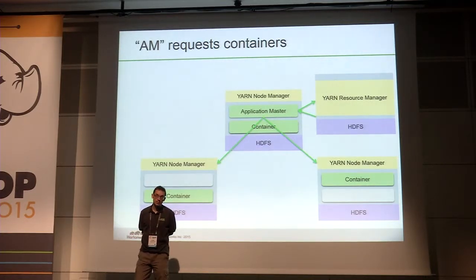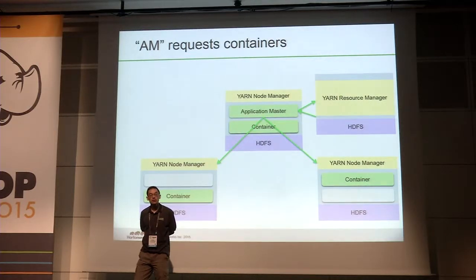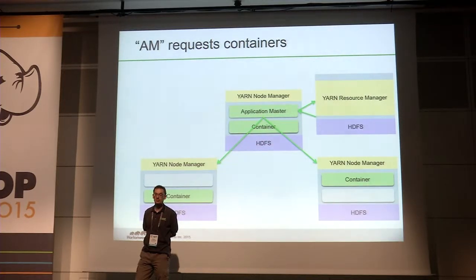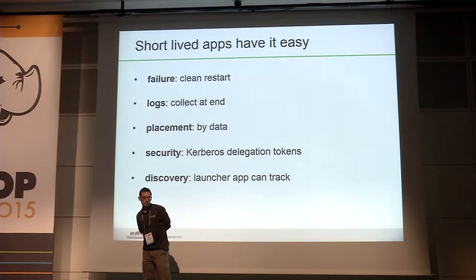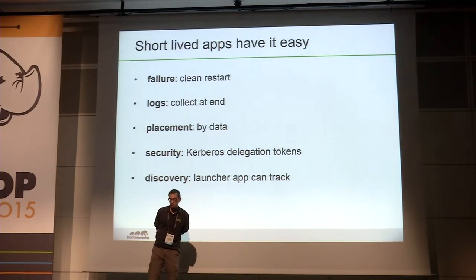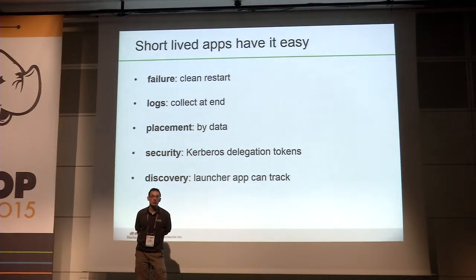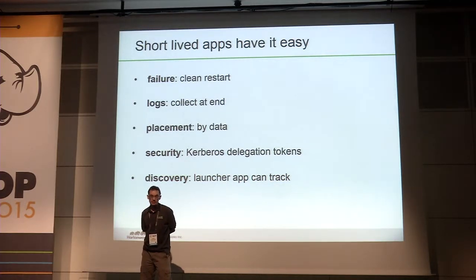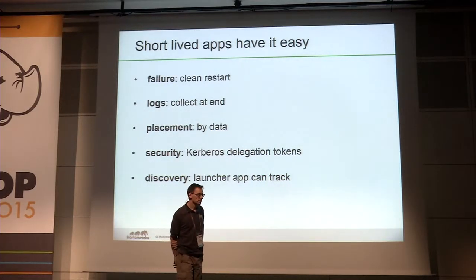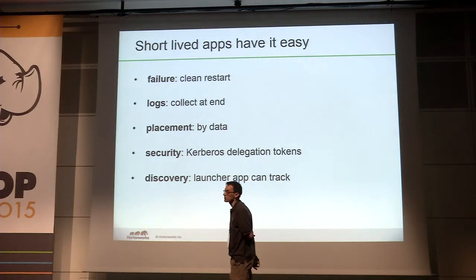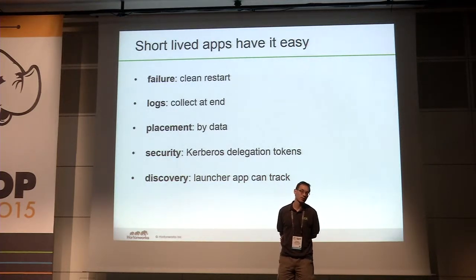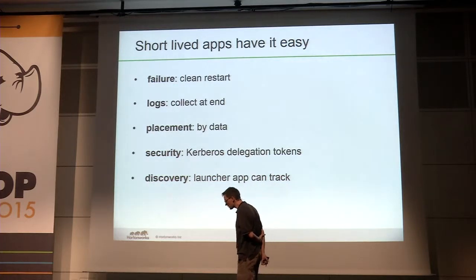In a MapReduce job, work gets rescheduled — it's meant to be side-effect free — and nodes can be blacklisted. Short-lived apps have a nice simple life: they don't run long enough to worry about Kerberos token security, YARN can schedule them easily near the data, and the logs get created and collected when the application finishes. The whole YARN UI is based on: something is running, something is 73% complete, or it's finished. It's a simpler world.